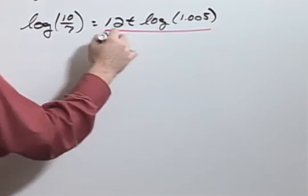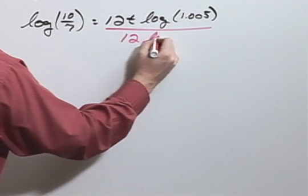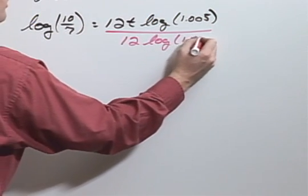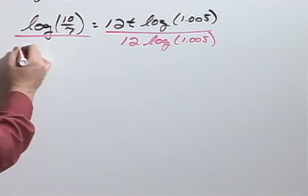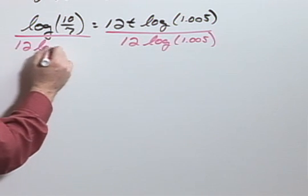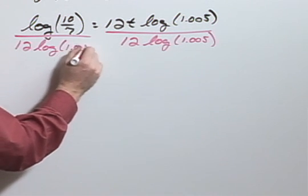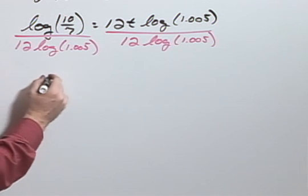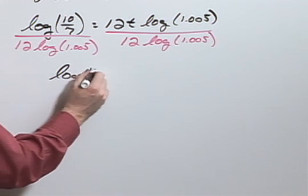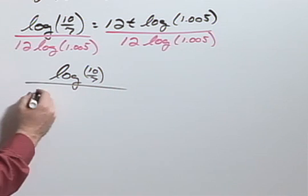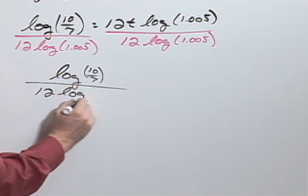Divide then by 12 times the log of 1.005 on both sides so that the log of 10 sevenths divided by 12 times the log of 1.005 will equal t.